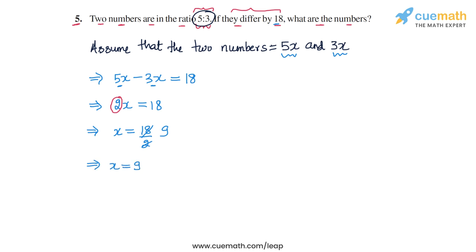But what we have found so far is the value of x. What we need to do is to find the values of the two numbers. So the two numbers are 5x and 3x. So from here we can find their values.